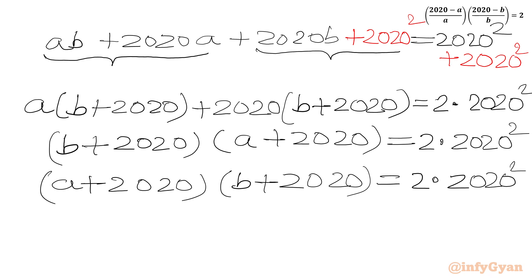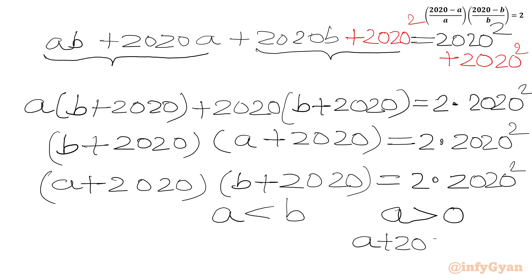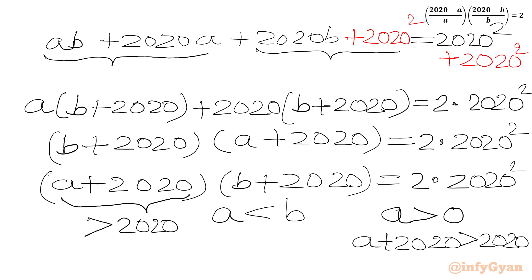Now, since a is less than b, and a is greater than 0, if we write a plus 2020, then this bracket must be greater than 2020. Similarly, since b is greater than 0, the factor (b plus 2020) must also be greater than 2020.